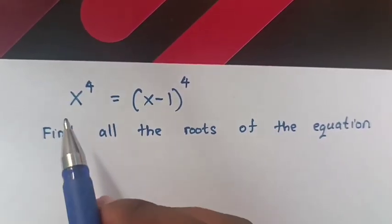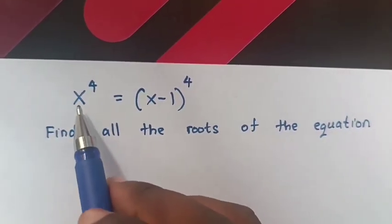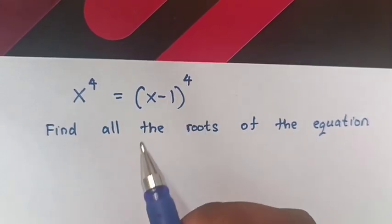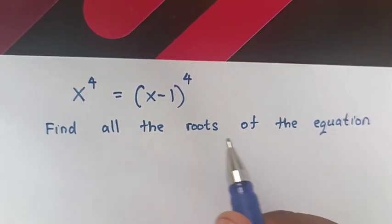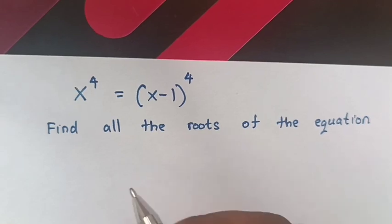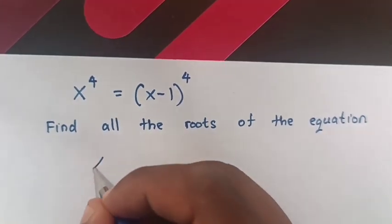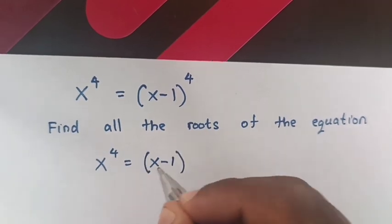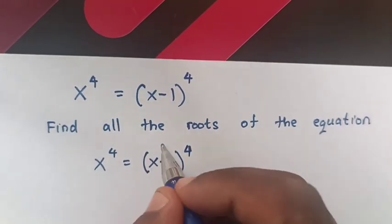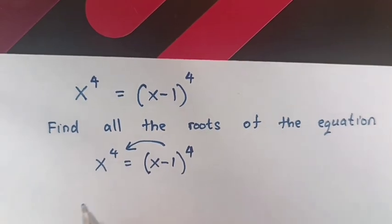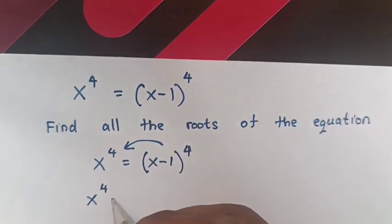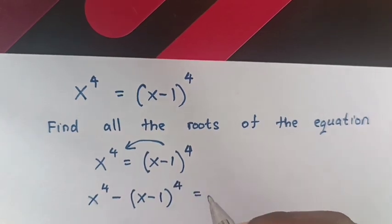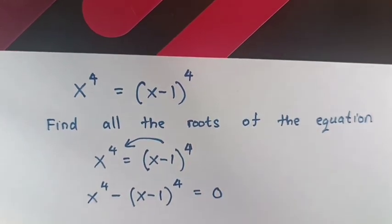Hello. How to solve x power 4 equals x minus 1 bracket power 4. Find all the roots of the equation. From our question, x power 4 is equals to x minus 1 bracket power 4. We take this to the left side, so it will be x power 4 minus x minus 1 bracket power 4 is equals to 0.